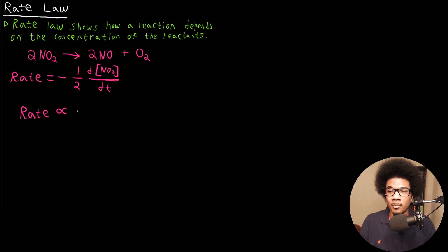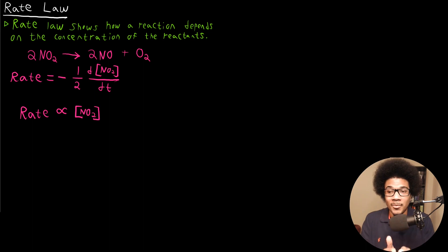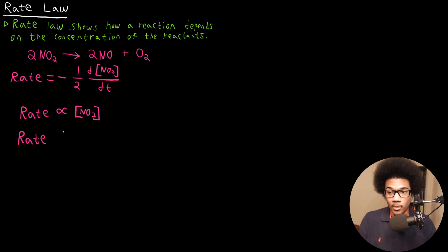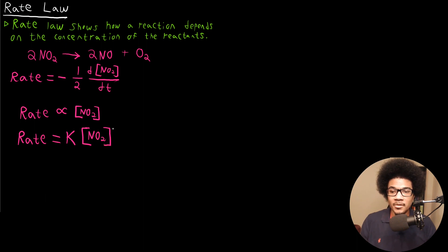We know that the rate of the reaction is going to be proportional to the concentration of NO2. And for any reaction, its rate is going to be proportional to the concentration of the reactants. What the rate law seeks to do is to build an equation based on this proportionality. It does this with the introduction of two things: a reaction rate constant and a rate order. So the rate is going to be equal to K, our reaction rate constant, times the concentration of our reactant raised to the power N.